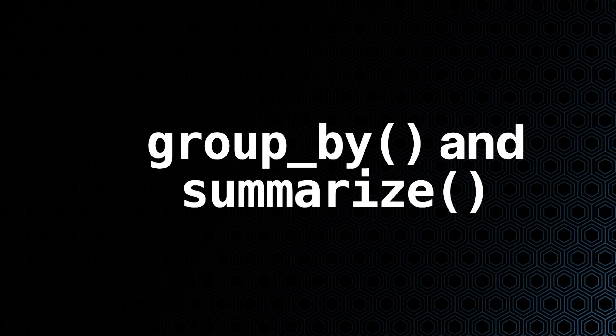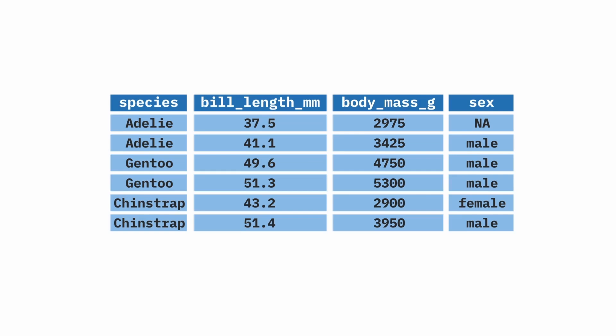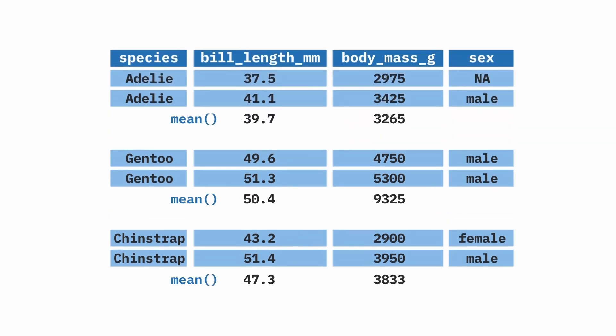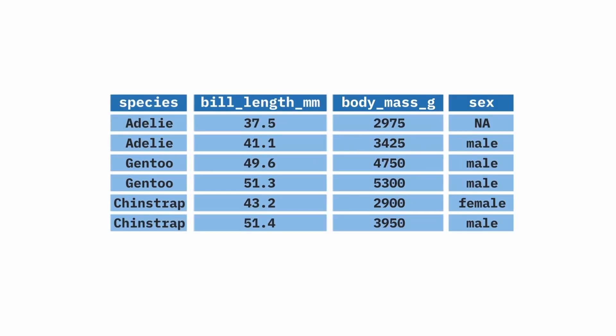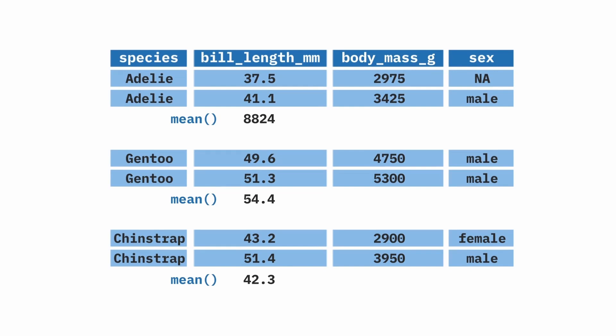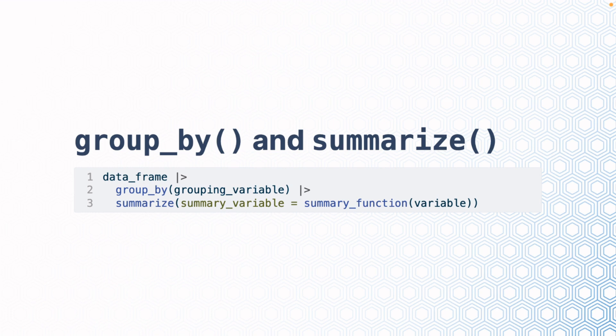The summarize function is useful, but it becomes even more useful when you combine it with the group by function. Think, for example, about wanting to create group summaries like calculating the average weight of our penguins on each island. In this animation, it's breaking our penguins data frame into groups by species, and from there it's calculating the mean bill length and mean weight for each group of penguins in each species.